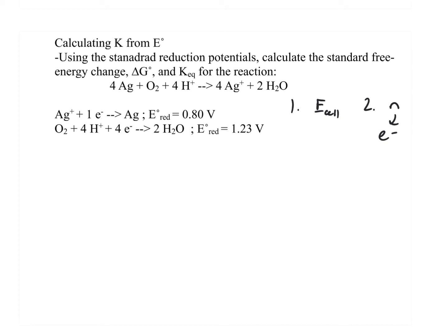First, let's figure out what the cell potential is. It's the bigger minus the smaller. I have 1.23 and I'm going to subtract 0.80. When I take 1.23 minus 0.80, I get 0.43 volts. So that is my first number — the volts from this voltaic cell.